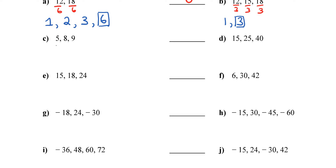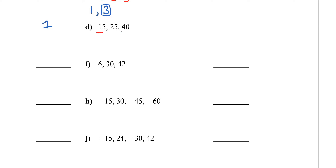For letter C with 5, 8, and 9, the only number that can divide all three is 1, so 1 is my greatest common factor. Moving on to letter D with 15, 25, and 40, the biggest number that divides all three evenly is 5. If you divide all these numbers by 5 you get no remainder, so 5 is my greatest common factor.